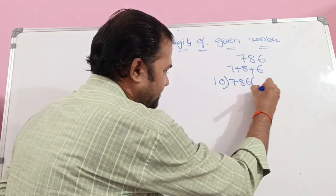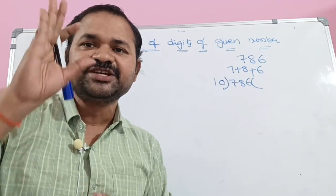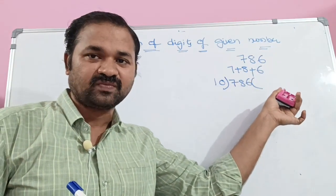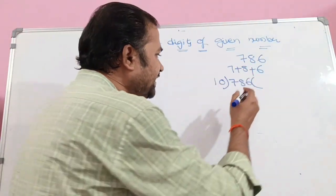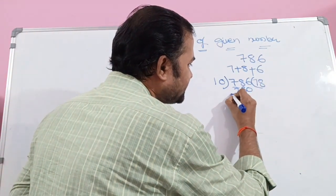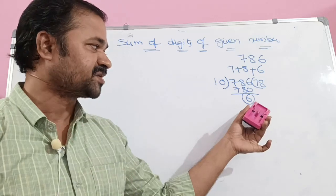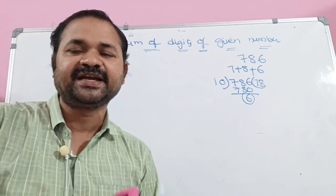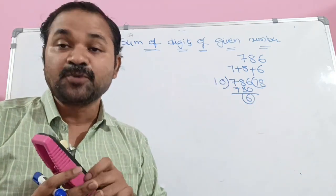786 divided by 10: since both are integers, in C language integer divided by integer gives an integer result, so we get 78 (not 78.6). Then 78 multiplied by 10 is 780, and 786 minus 780 is 6. So the remainder is 6. After getting the remainder, we add it to the sum variable. Initially sum is 0, so 0 plus 6 makes sum equal to 6.